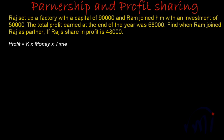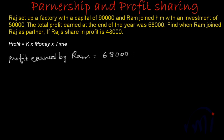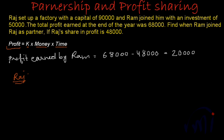If Raj earns a profit of 48,000, the profit earned by Ram will be 68,000 minus 48,000 = 20,000. Using profit = K × money × time: for Raj, 48,000 = K × 90,000 × 12 months, since Raj invested for the whole year. I am converting one year into months because Ram is joining in between, so the unit of time will be in months.